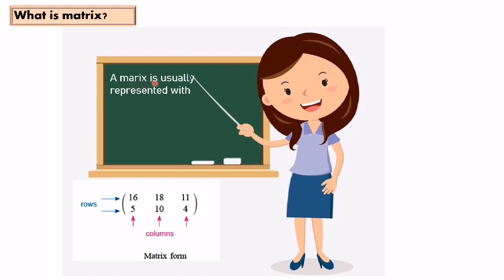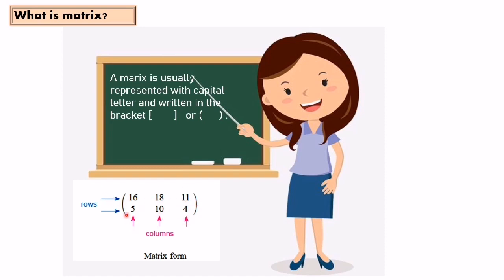A matrix is usually represented with a capital letter and written in brackets. Here we have an example of numbers written in matrix form. This is called a row and this is called a column. So here we have two rows and three columns.